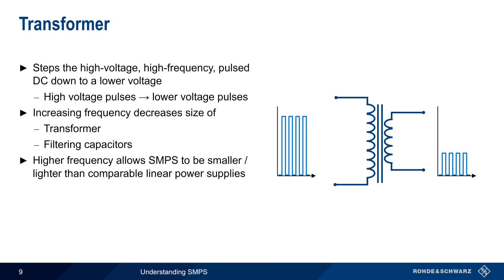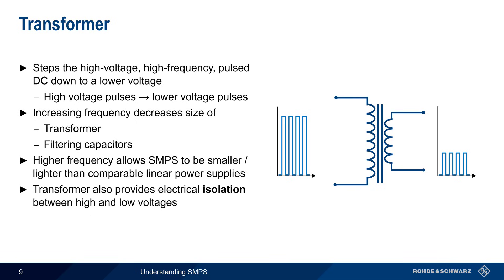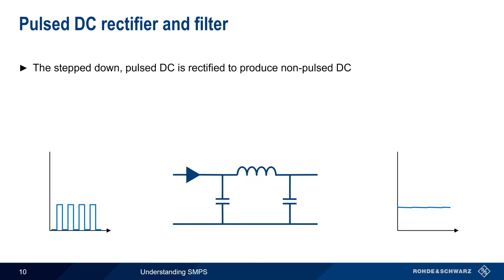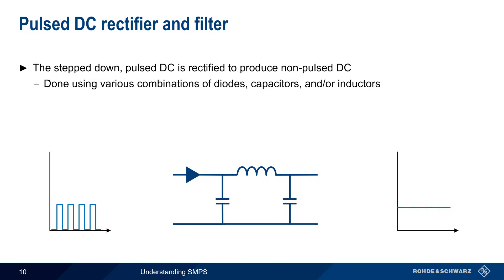In addition, this transformer also provides electrical isolation between the high side and low side voltages in the supply, which is often important for safety reasons. The step-down pulse DC output of the transformer is then rectified to produce non-pulsed constant DC. There are several different ways of doing this, but all involve some combination of diodes, capacitors, and/or inductors.